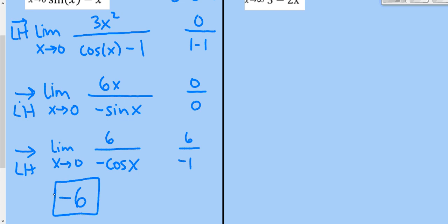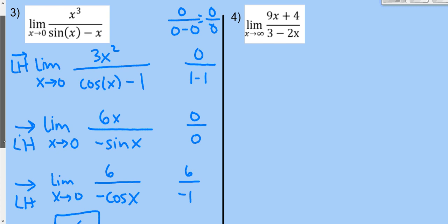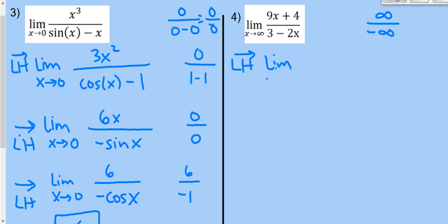Problem 4: the limit as x→∞ of (9x+4)/(3-2x). Plugging in infinity: 9·∞+4 = ∞, and 3-2·∞ = -∞. We have ∞/(-∞), so L'Hôpital's rule applies. Taking derivatives: the derivative of (9x+4) is 9, and the derivative of (3-2x) is -2. The answer is 9/(-2) = -9/2.